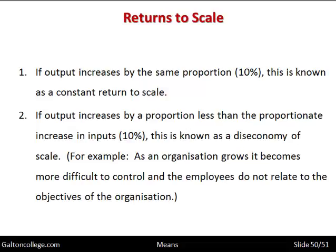So returns to scale can be increasing — because the company benefits from specialised machinery, specialised personnel, research and development, and discounts on purchases; constant — where growth in inputs is matched by equal growth in output; or diminishing — where a company grows by 10% but output grows by less, due to difficulties in management control, communications, worker motivation, and workers not relating to the objectives of the business. These are the key issues when we consider the means of production, back to Robbins' definition, and that's all I want to deal with in this talk.